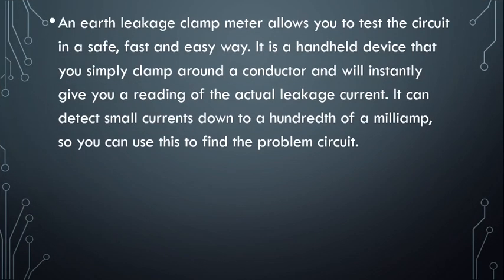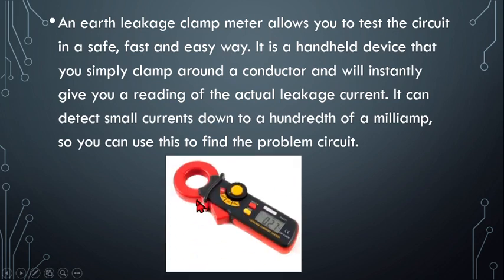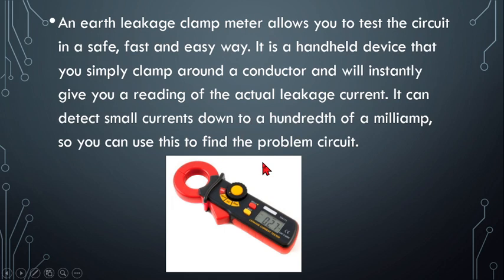Next we have the earth leakage clamp meter, a handheld device that allows you to test a circuit in a safe, fast, and easy way. You simply clamp it around a conductor and it instantly gives a reading of the actual leakage current. It can detect very small currents down to a hundredth of a milliamp. It is used to find leakage current going to the ground, which can cause electric shock and other faults in the system.